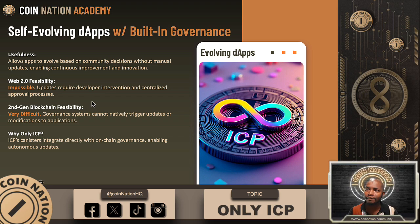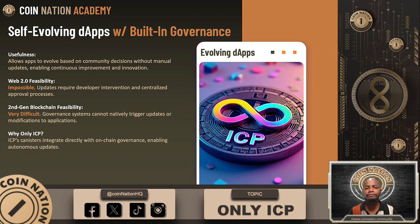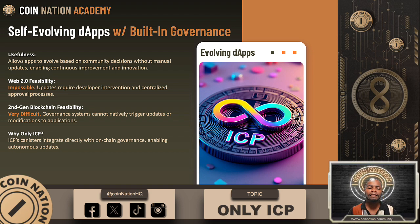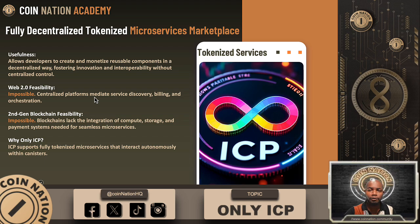Self-evolving dApps with built-in governance. Imagine an app that adapts and updates itself based on user votes — no developers, no downtime. This is only possible on ICP. Traditional systems need manual updates, and even blockchain-based apps on platforms like Ethereum require redeployment by developers. ICP's canisters directly integrate with on-chain governance, allowing decisions to trigger automatic updates. This makes ICP the only platform where apps can evolve entirely based on user input without manual intervention. Are you getting bullish yet? Are you in position? Are you in the eight-year game yet?